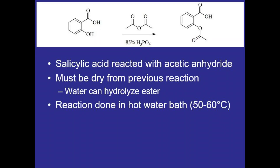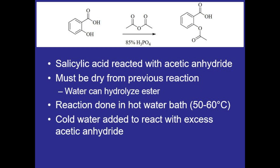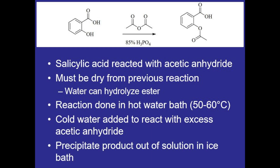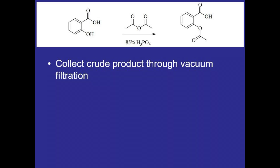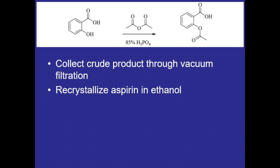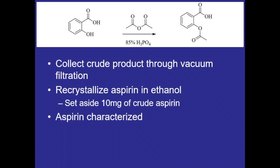This reaction will be done in a hot water bath to monitor the temperature, which we'll want between 50 and 60 degrees Celsius, and we'll let that go for about 15 minutes. After which we'll add cold water to react with any excess acetic anhydride left over. We'll let the product precipitate out of solution in an ice bath, collect the crude product through vacuum filtration, and recrystallize it in ethanol. Before recrystallization, I'll set aside 10 milligrams of crude aspirin to show how recrystallization affects the melting point. Finally, the aspirin can be characterized by taking its melting point and running an IR spec.